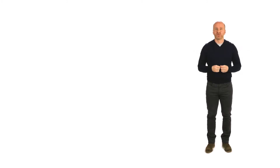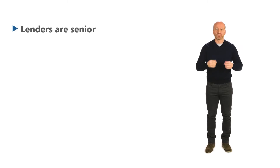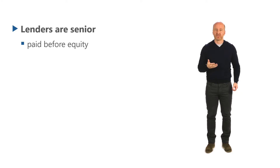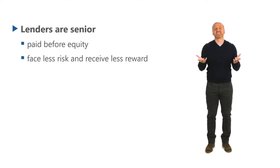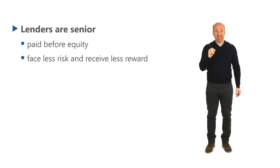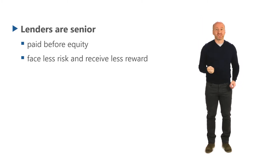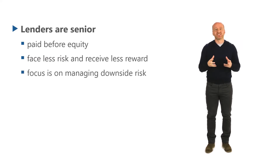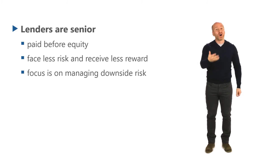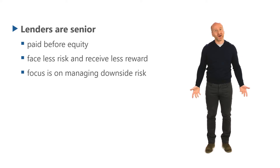Lenders are senior to the owners, so debt is repaid as scheduled before any dividend distributions can be made to the equity investors. Therefore, lenders face less risk and also less financial reward — their upside is capped. Lenders who receive no upside from good performance and are only potentially harmed by very bad performance are largely engaged in negotiating to control their downside risk, oftentimes at the expense of the equity investors' upside benefit.